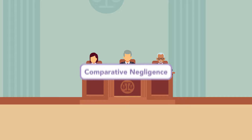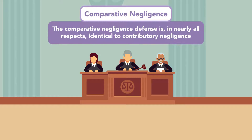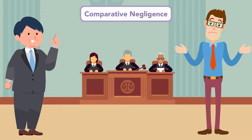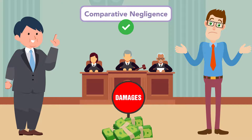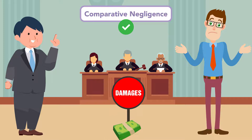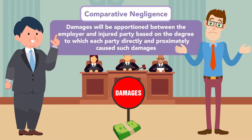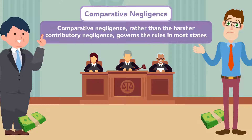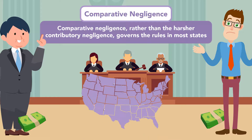Comparative negligence is, in nearly all respects, identical to contributory negligence. The one exception is that if the defendant successfully asserts a comparative negligence defense, it will merely reduce, rather than eliminate, the damages an injured party may recover. Consequently, damages will be apportioned between the employer and the injured party based on the degree to which each party directly and proximately caused such damages. Comparative negligence, rather than the harsher contributory negligence, governs the rules in most states.